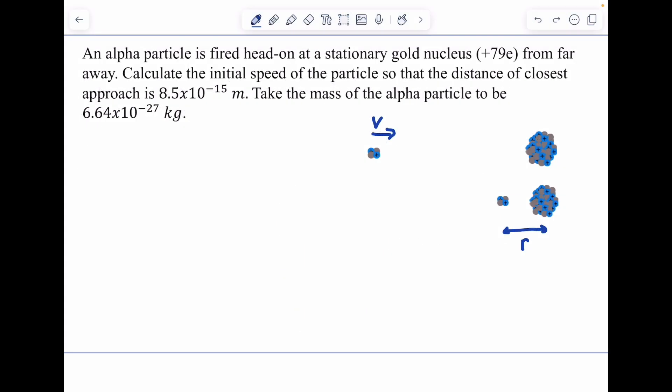Now for applying conservation of energy, there's no energy lost here, so I can write Ui plus Ki equals Uf plus Kf. In this case, it has only kinetic energy when it's first fired, and then when it gets close, it has no kinetic energy but it does have potential energy.